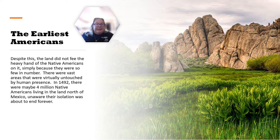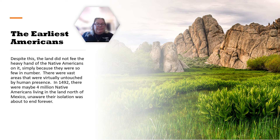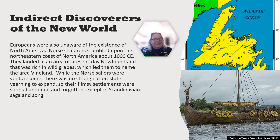Despite the controlled burns, the land did not feel the heavy hand of Native Americans on it, simply because there were so few in number — vast areas were virtually untouched by human presence. In 1492, there were maybe 4 million Native Americans living north of Mexico, meaning most of that 54 million were living in Mexico and south. Meanwhile, Europeans were also unaware of the existence of North America. Norse seafarers stumbled upon the northeastern coast around 1000 CE, landing in present-day Newfoundland — rich in wild grapes — which led them to name it Vinland. While the Norse sailors were venturesome, there was no strong nation-state yearning to expand, so their flimsy settlements were soon abandoned and forgotten, except in Scandinavian saga and song.